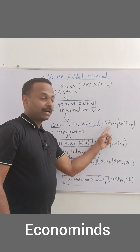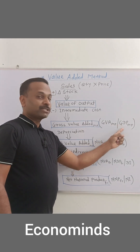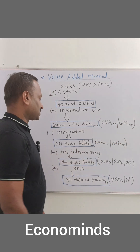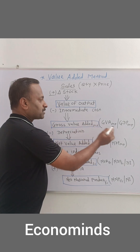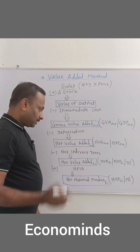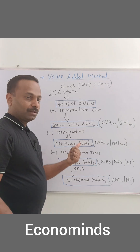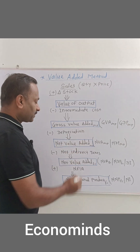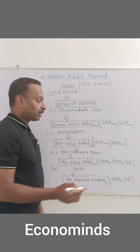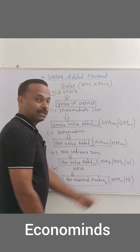Then you will arrive at the gross value added at the market price, which is also known as gross domestic product at the market price. From GDP at the market price, deduct depreciation, and you will get net value added at the market price.